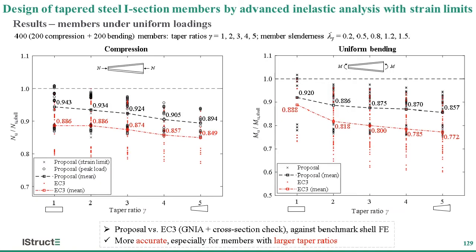Now let's move on to the results obtained from the proposed design method. First, the loading conditions of pure compression and pure uniform bending. These two figures show the ratios of ultimate resistance predictions obtained from the proposed design method (black points) and those determined according to Eurocode (red points), to benchmark shell FE results, versus taper ratios ranging from 1 to 5. The black and red dashed lines represent average values. It can be seen that the proposed design method provides more accurate predictions than the traditional design method, especially for members with larger taper ratios.